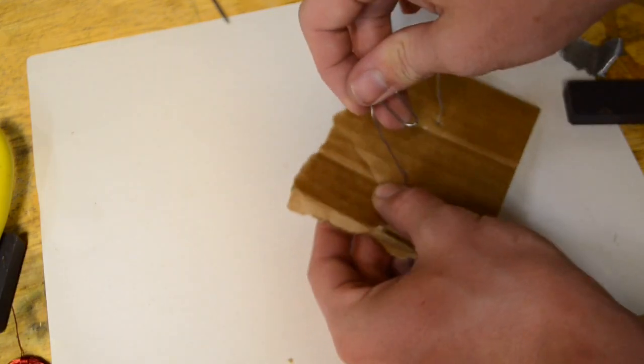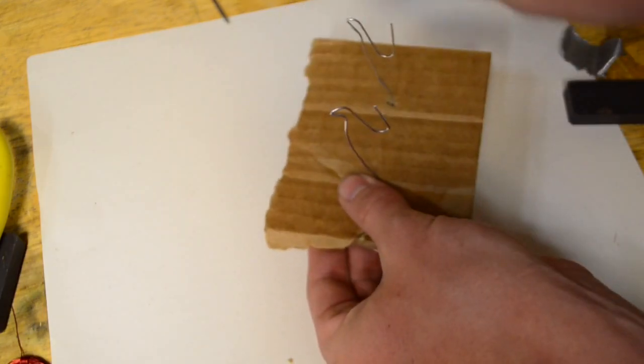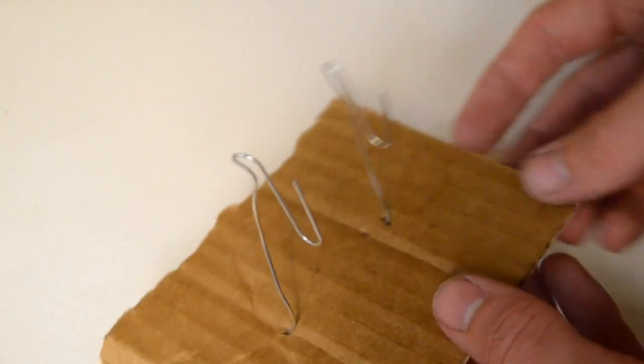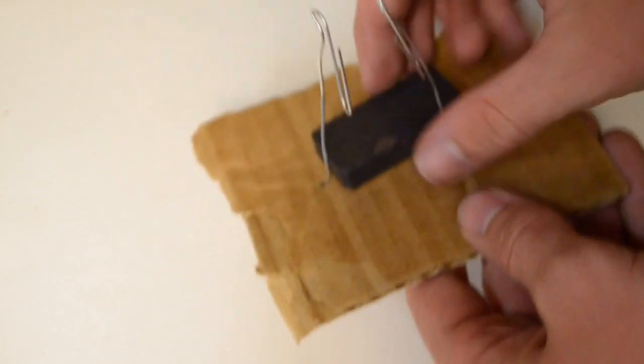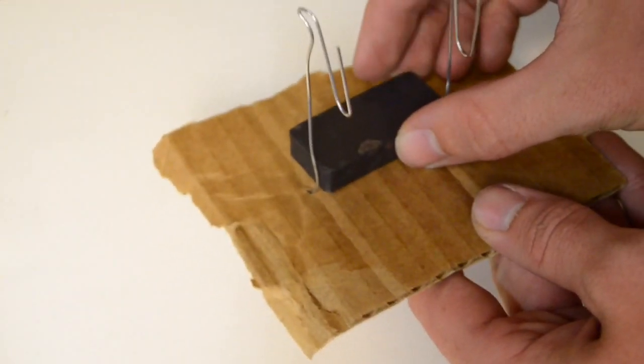Now go ahead and do the exact same thing with the other paper clip on the other hole that you marked. Now you should have something that looks like this. Go ahead and take the magnet and carefully insert it in between the two paper clips.